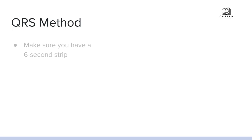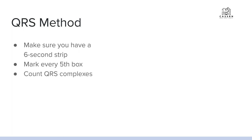First, we have the QRS method. You want to make sure that you have a six-second strip, and you're going to mark every fifth box. Remember from my other video on EKG basics, five boxes equals one second — that part's important. Then you're going to count the QRS complexes and multiply that by 10, because there are 60 seconds in a minute and we need beats per minute. So in counting a six-second strip, you multiply by 10.